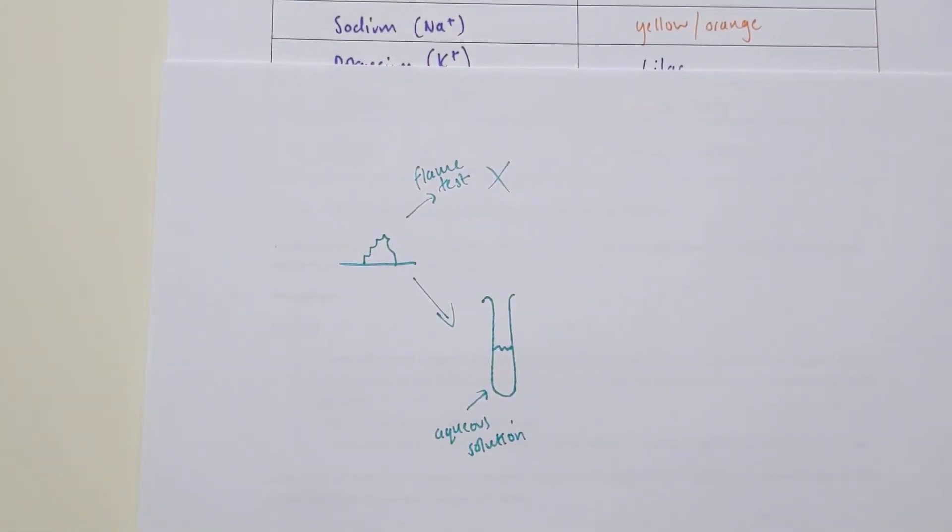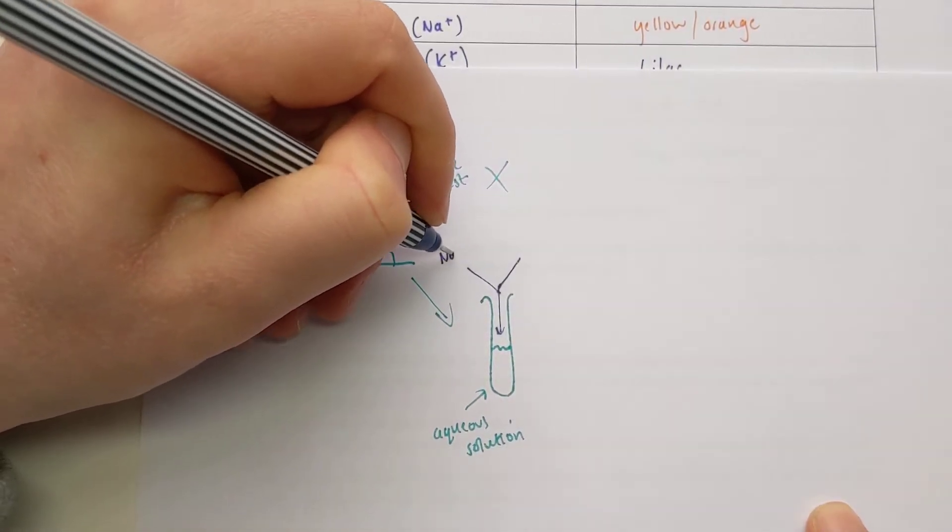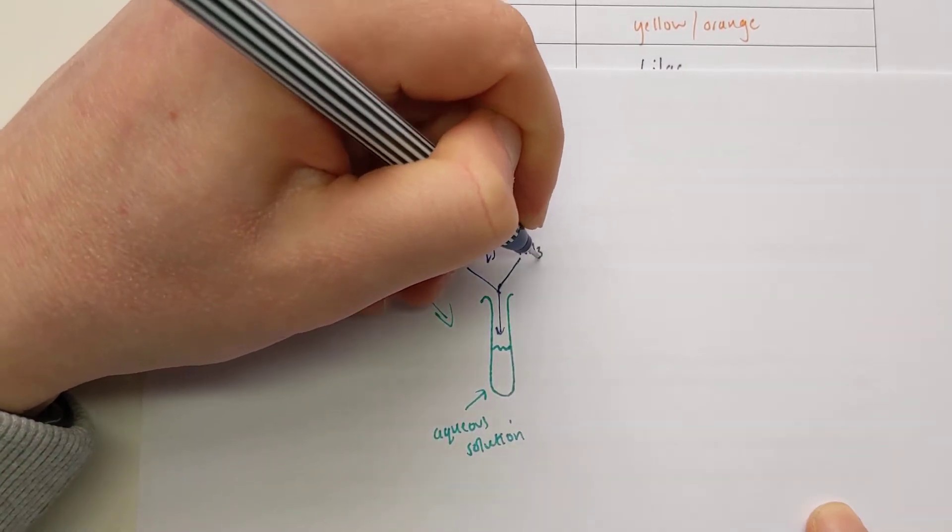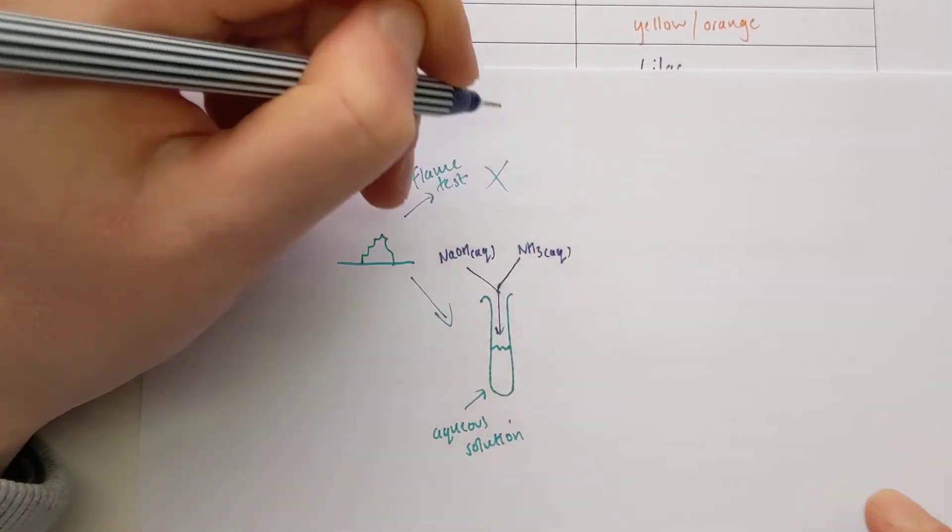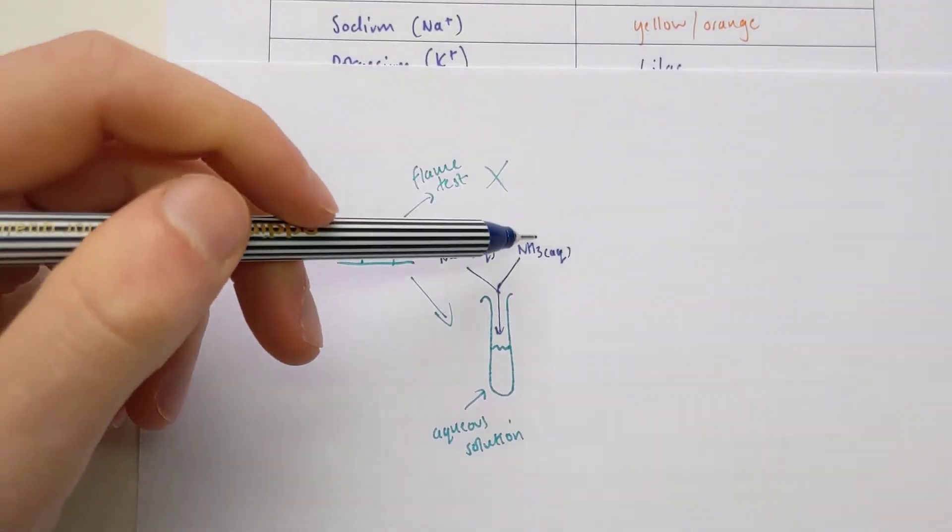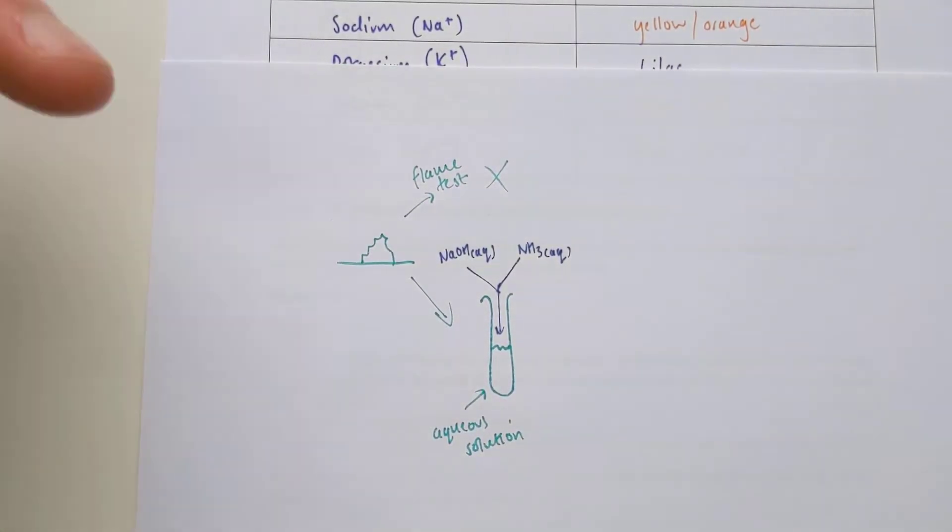In the next part of the test, I add one of two things. I can either add sodium hydroxide solution or ammonia solution. You remember that from acid-base and salts. That's a strong alkali, a weak alkali. For most of the metals, it doesn't actually matter which one I add. I will get the same result from both. But we're looking at examples where you might want to add one or the other to see a difference.